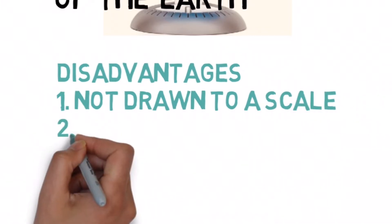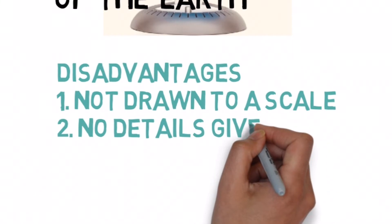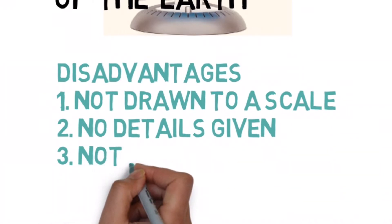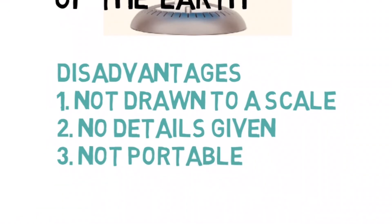The distance that is shown between the land masses and water bodies is not accurate. Number two, it also does not give us any detail of a particular landform, a particular area, or a water body. Number three, it is not portable. That is, you cannot carry it around, it is not easy or comfortable to carry it around.